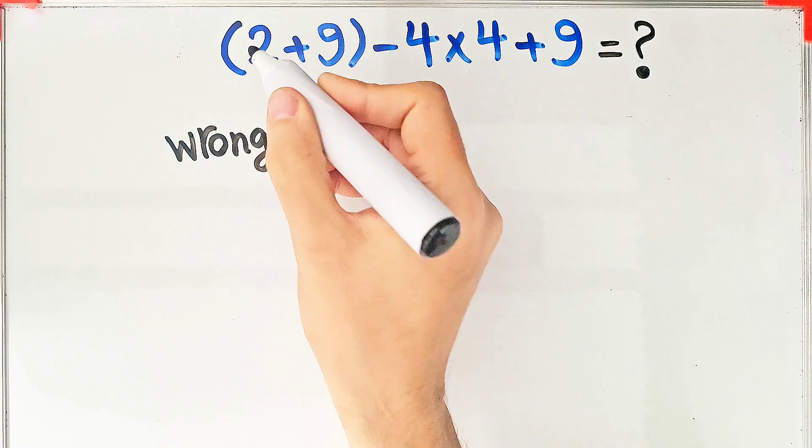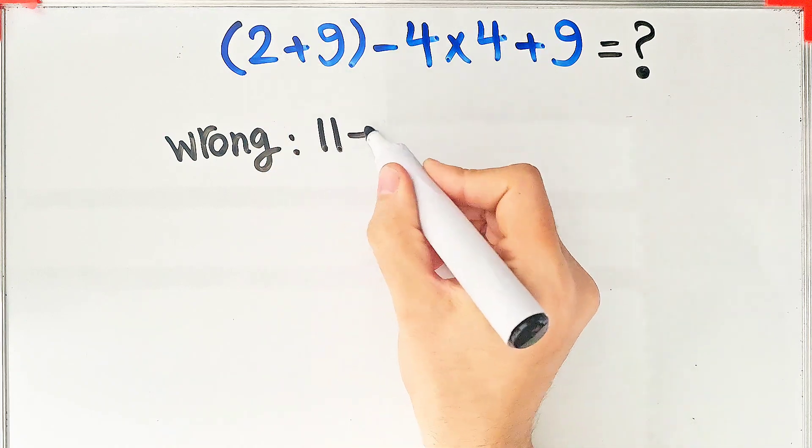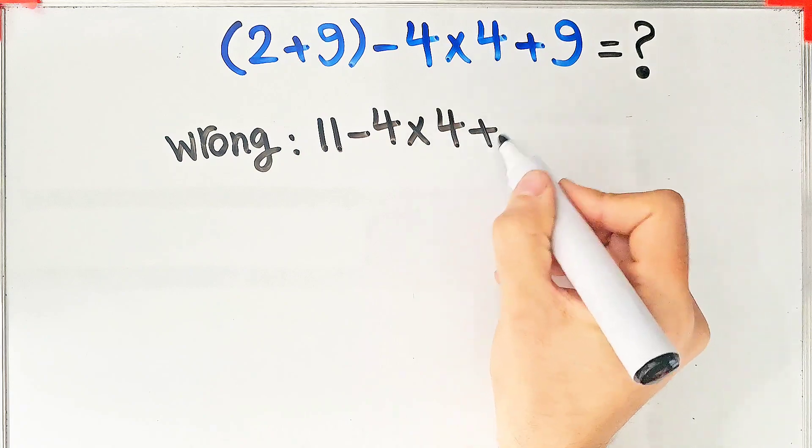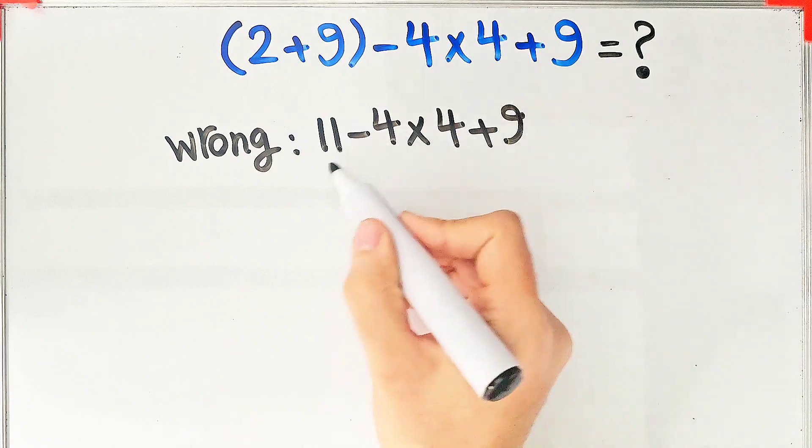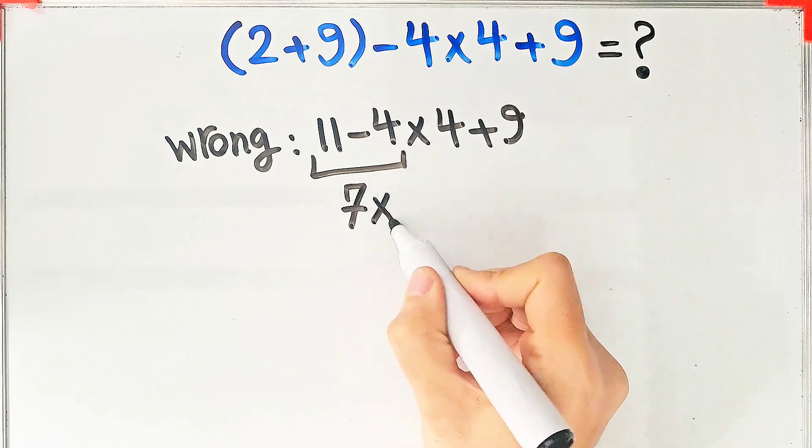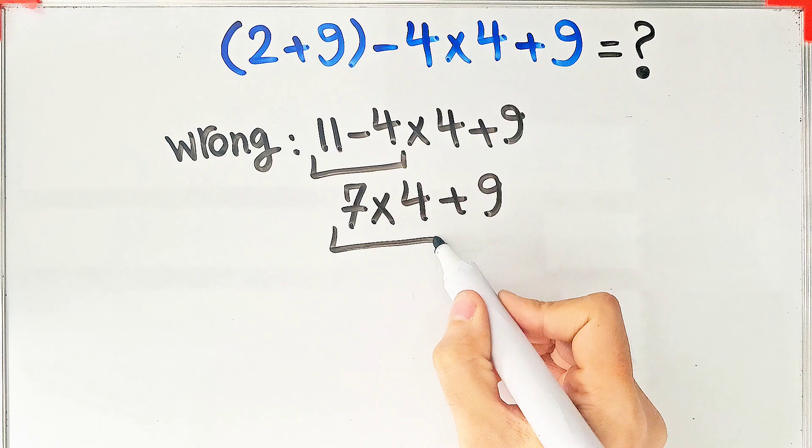They say 2 plus 9 equals 11. 11 minus 4 times 4 plus 9. Again, they start from the left and simplify the question. 11 minus 4 equals 7, 7 times 4 then plus 9.